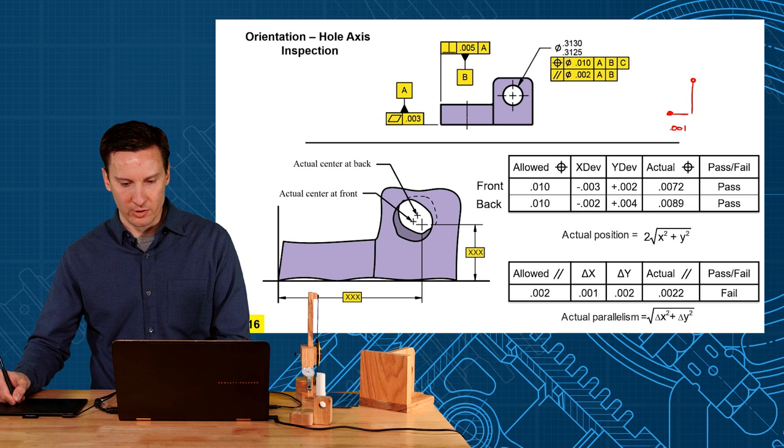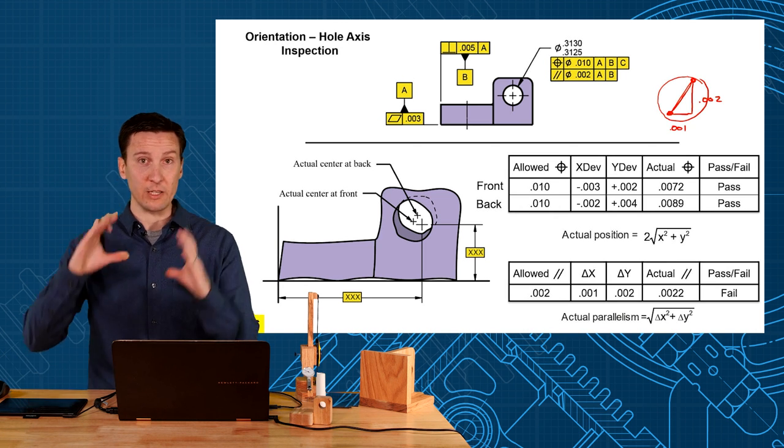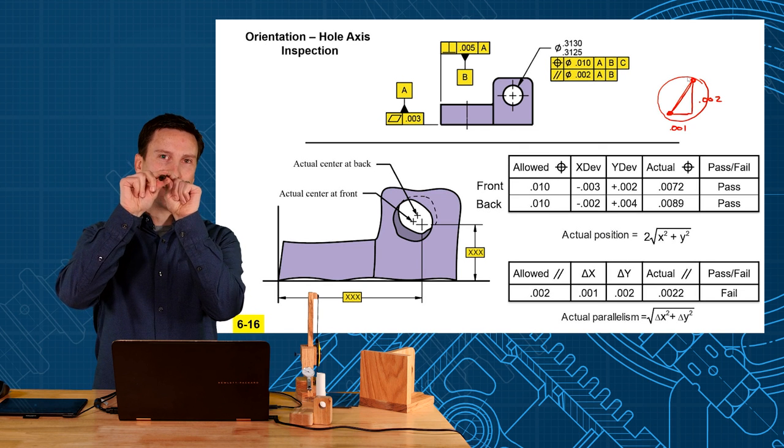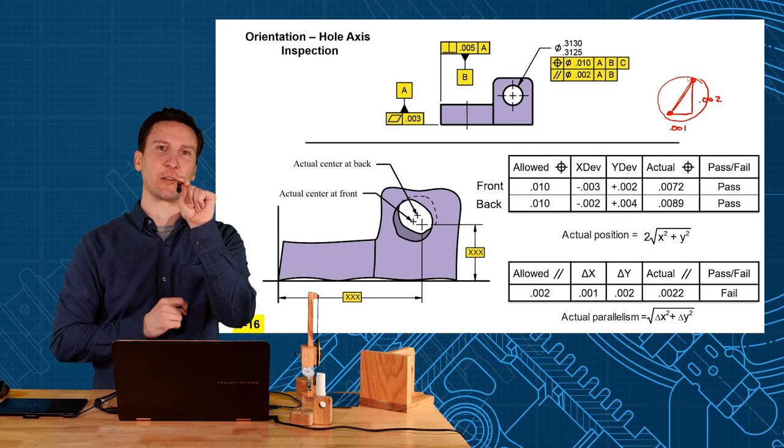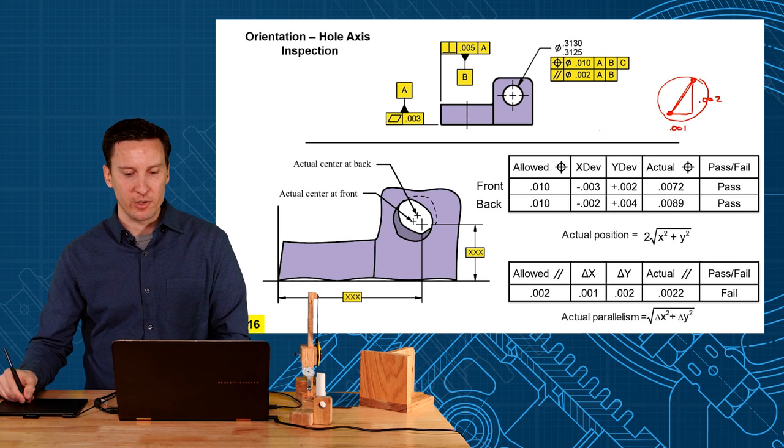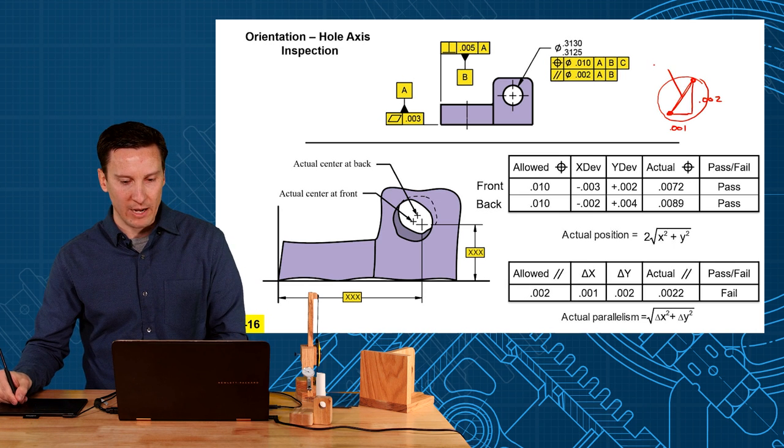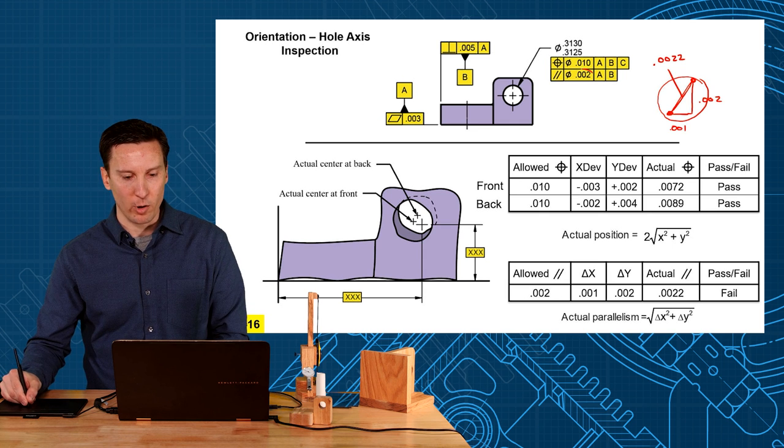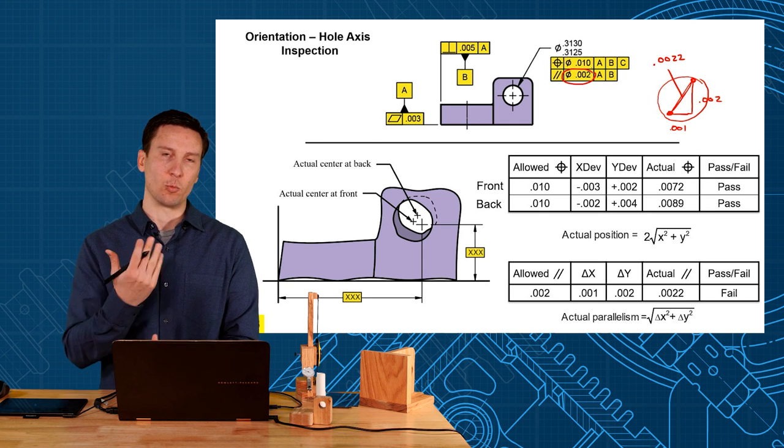That's going to represent the tolerant zone that you can squeeze down to just contain the front and back of the hole while staying perfectly parallel to your datums. So this hypotenuse here is what we've calculated as 0.0022. And that is more than what our specification allowed, which was only two thou.